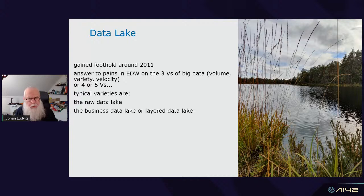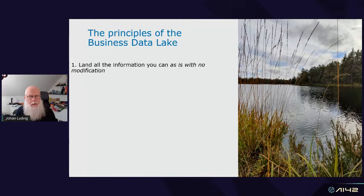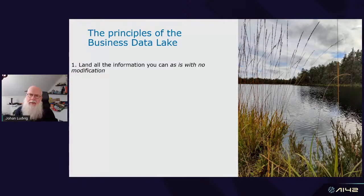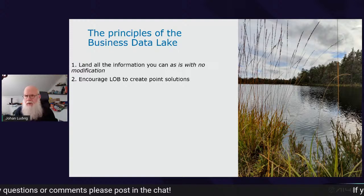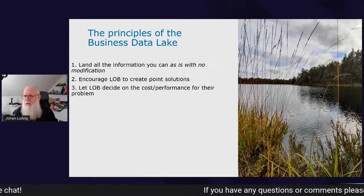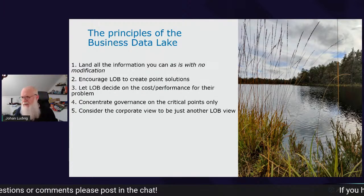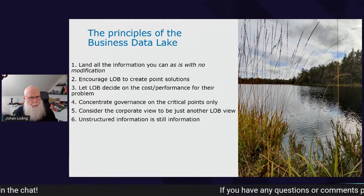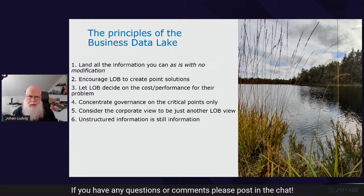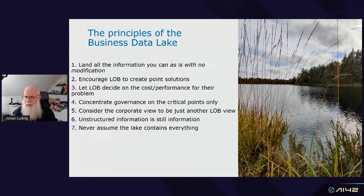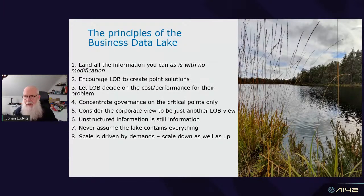The typical data lakes have a raw data lake layer and then a business data lake layer. The first principle is the same: you land all the information you can, as is, with no modification — a one-to-one with the source. You encourage line of business to create point solutions and let them decide on cost and performance for their problems, which means IT can concentrate governance on the critical points only. The corporate view — hence the data warehouse view — is just another line of business view. Scale on data lake is driven by demand, so you can scale down as well as up.